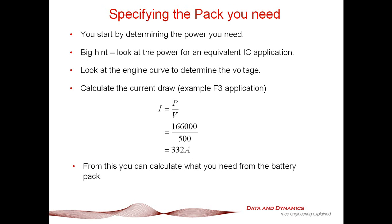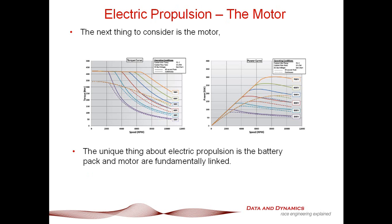Specifying the pack you need. First of all, start off by determining the power you need. Nothing happens in a vacuum. Start from an internal combustion engine application to determine the power you're going to need. Then you look at this engine curve here. Once you know the power you want, you look at this power curve here to determine the battery, to determine the voltage you require. Once you know the voltage you require, then you can go off and calculate the number of LiPo cells you need in series.